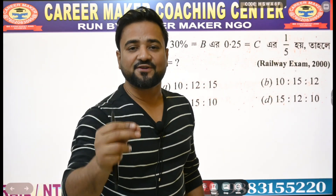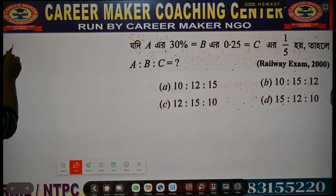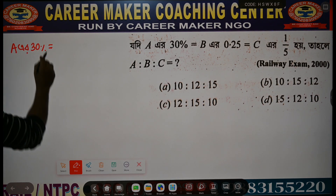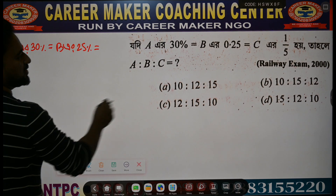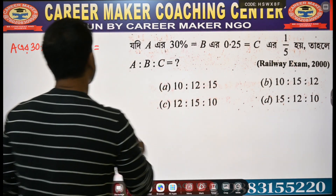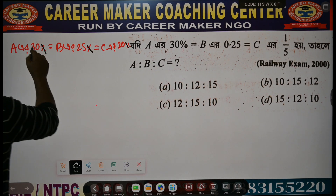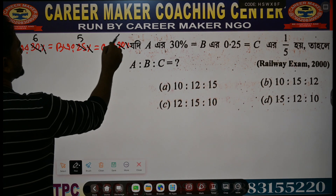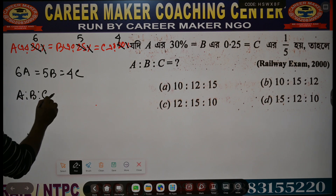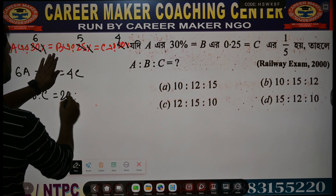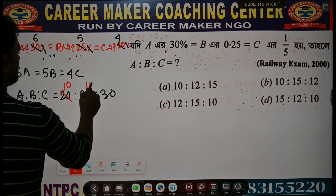When percentage is converted to fraction: 30% of A equal to B — convert percentages. A times 30% equal to B, A times 0.25 gives another value. 35% of B and A times 25% equal to C means 1 by 5 equal to 20%. Ultimately 6A equal to 5B equal to 4C. So A is to B is to C: A = 5×4=20 → LCM gives A:B:C = 10 is to 12 is to 15.